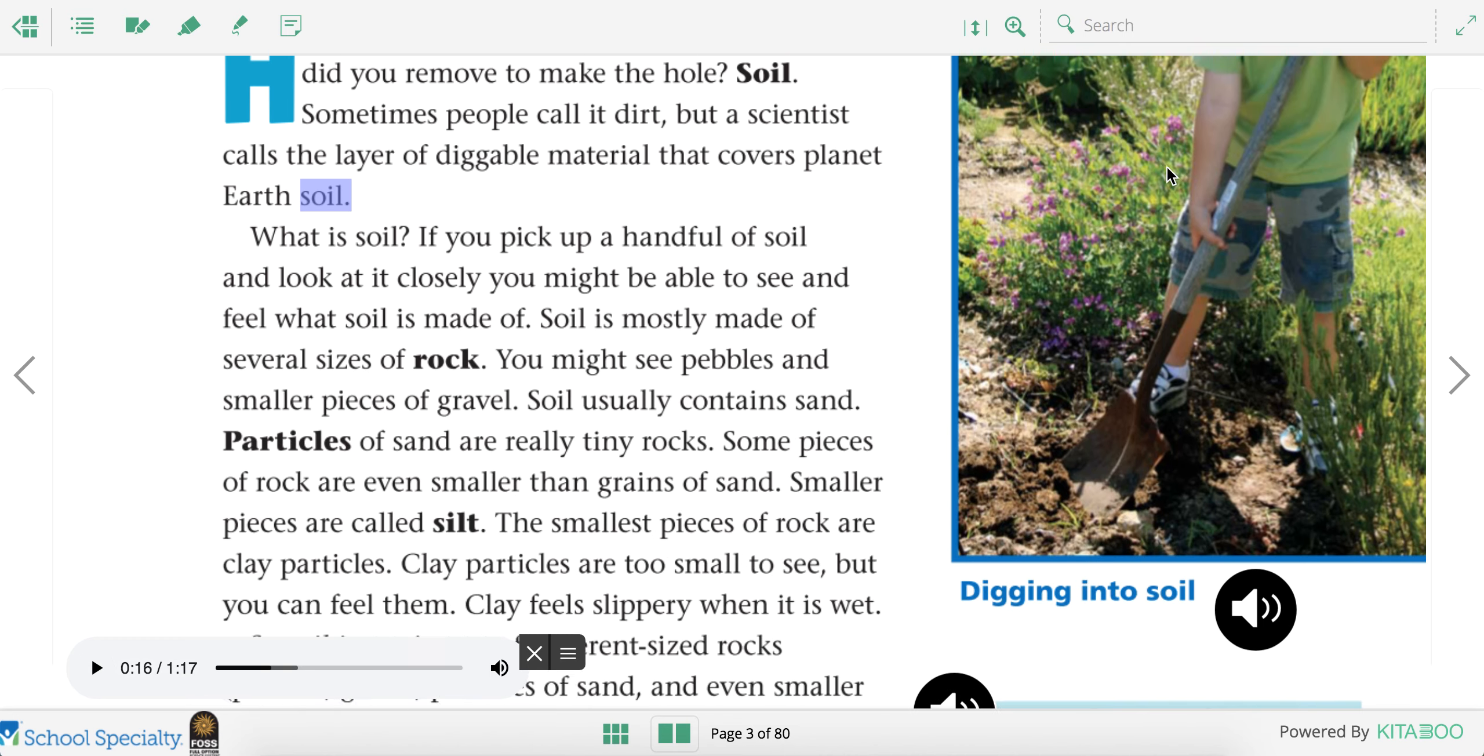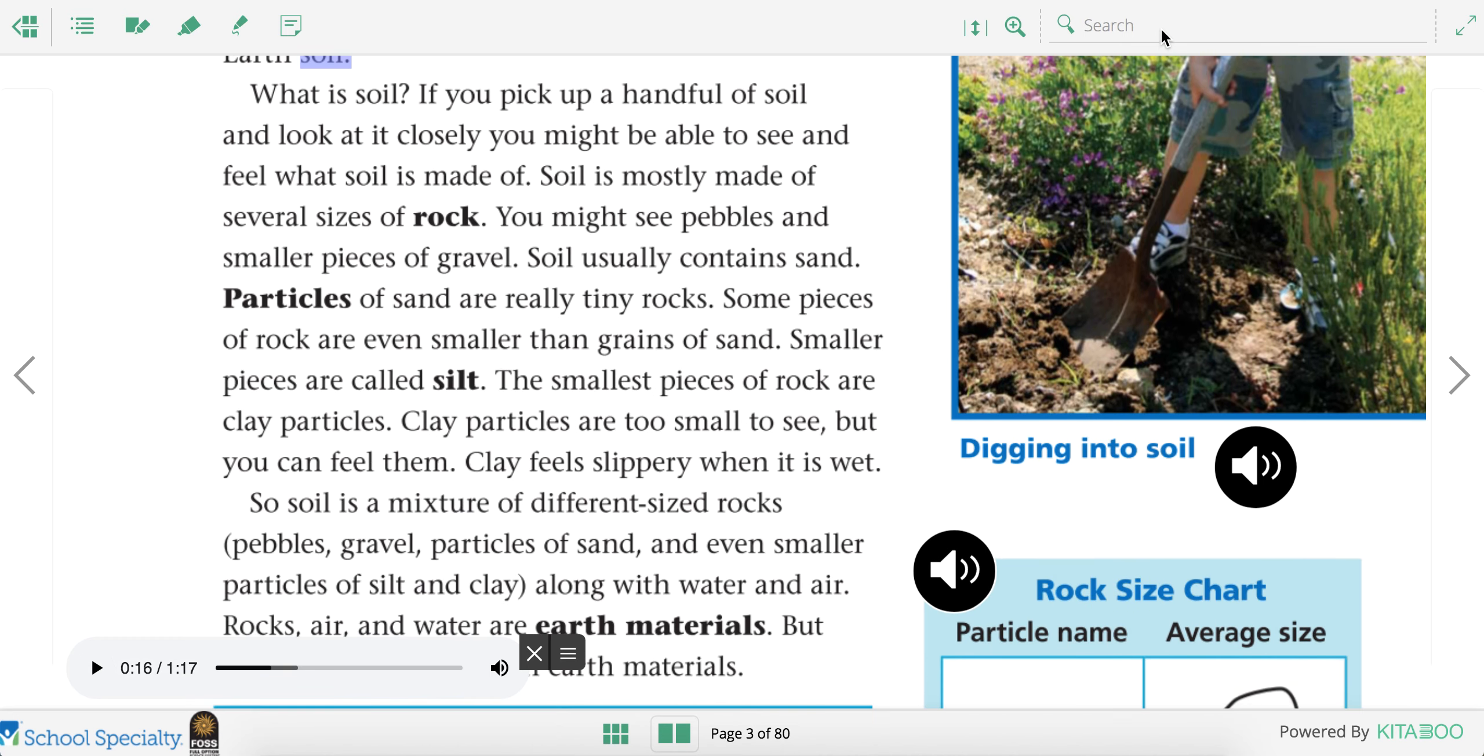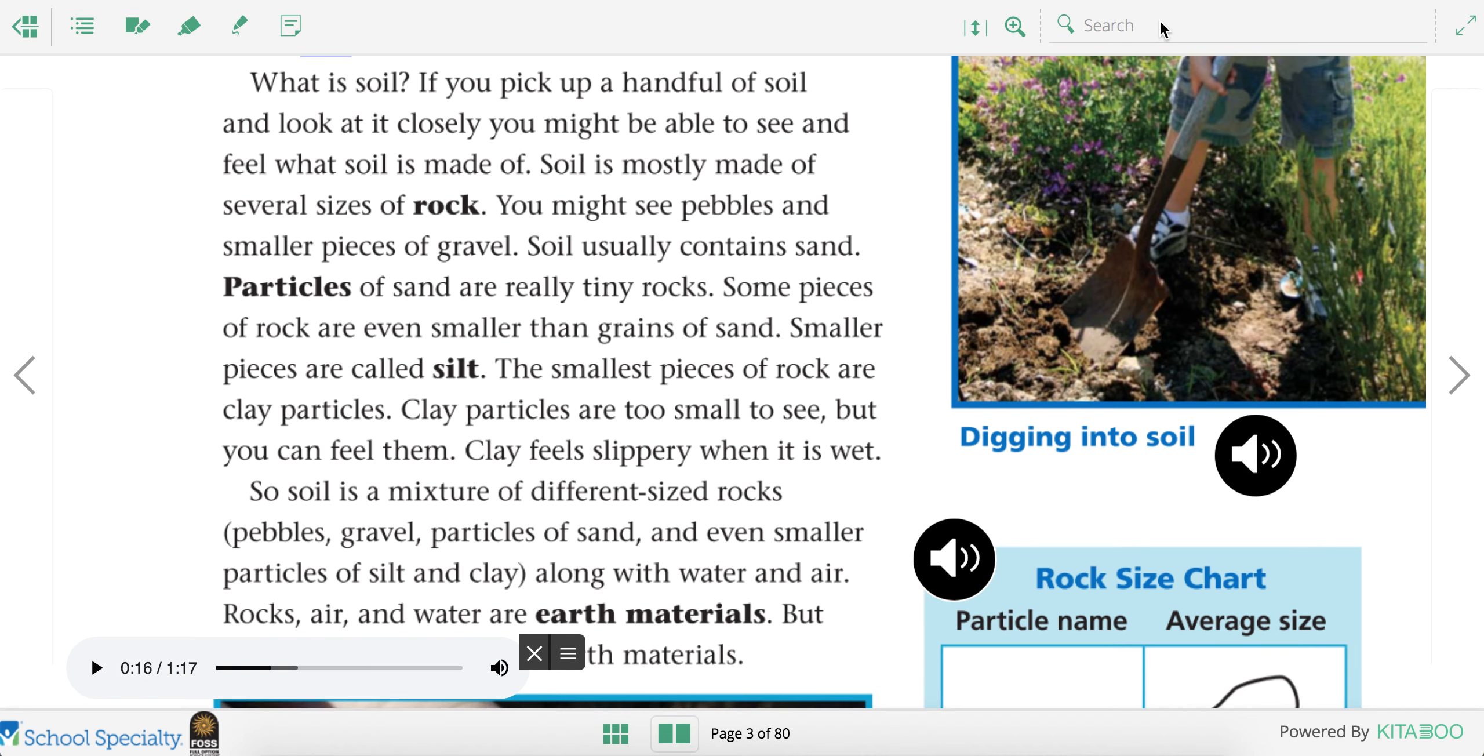I'm just going to move it up and we'll keep listening. What is soil? If you pick up a handful of soil and look at it closely, you might be able to see and feel what soil is made of. Soil is mostly made of several sizes of rock. You might see pebbles and smaller pieces of gravel. Soil usually contains sand. Particles of sand are really tiny rocks.